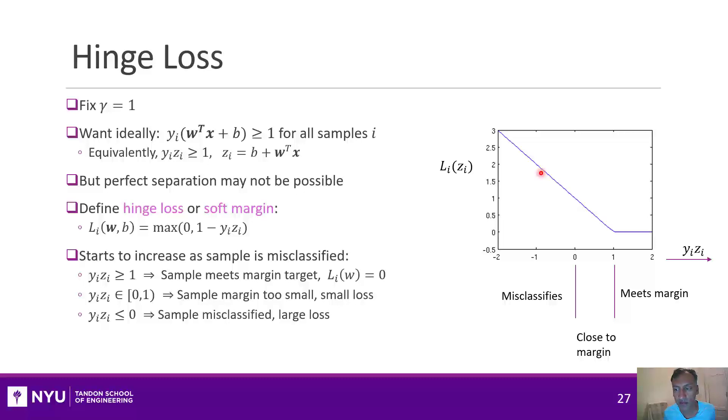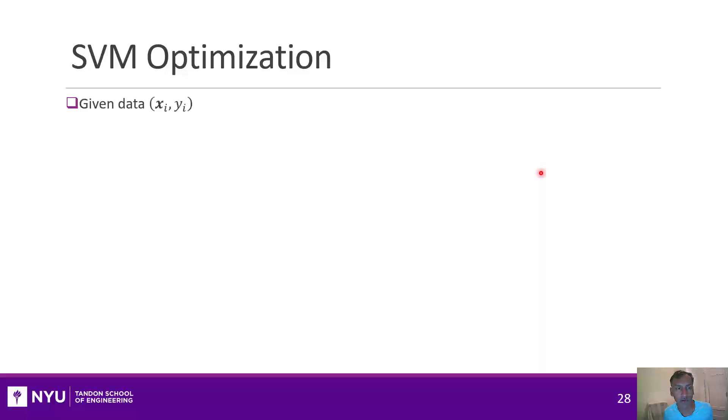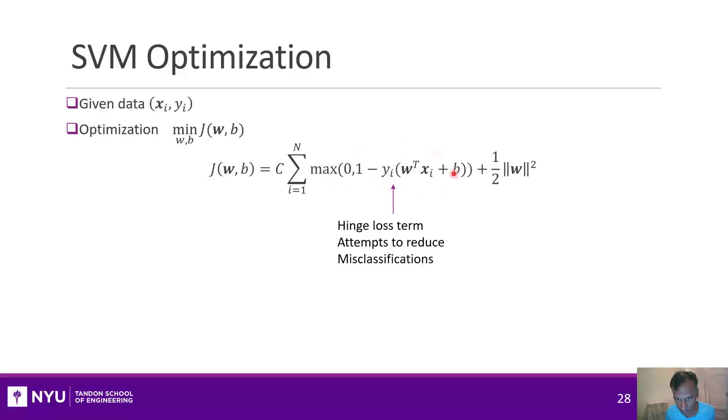Now that we have this hinge loss, we can define the SVM optimization. We have some data, xi, yi. And then SVM just minimizes this cryptic-looking function here. Let me walk you through this for you to understand what this function is. There's kind of three points I want to point out to you. The first term, this thing here, is actually none other than just the hinge loss. Because it's exactly that max of zero, one minus this expression here. So when I try to minimize this, I'm trying to minimize that hinge loss across the samples. I'm trying to get the points as far away from the margin as possible. But I let some points not be within the margin, and I in fact even let some points be misclassified if needed.